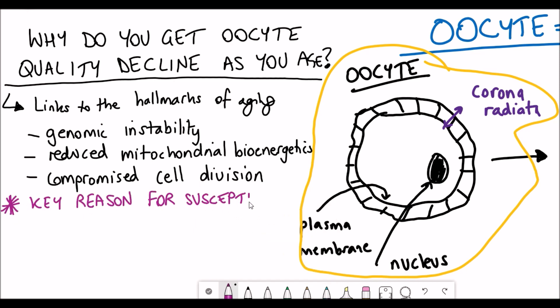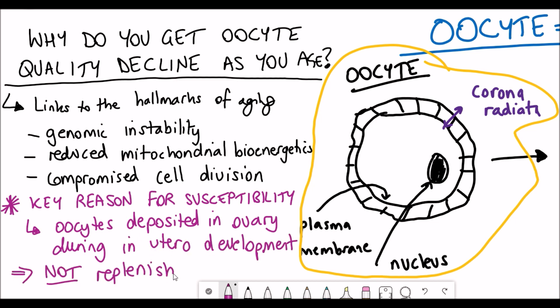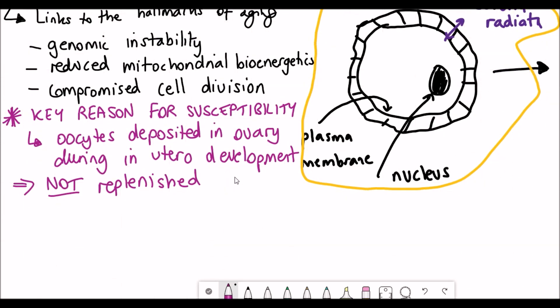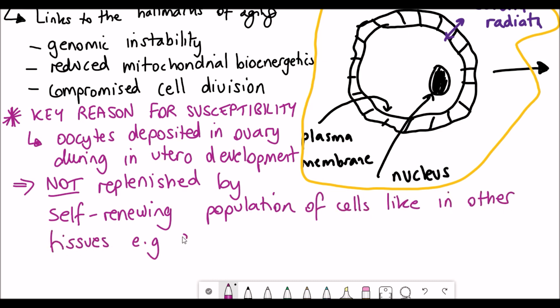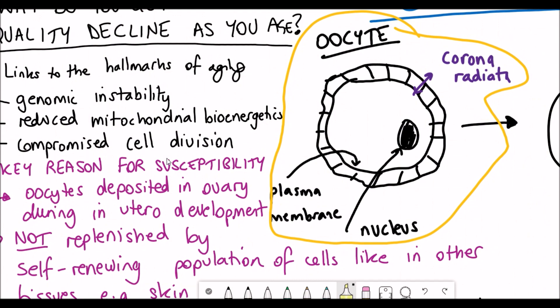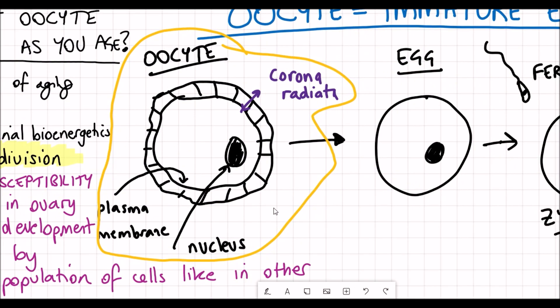One of the main reasons why oocytes are so susceptible to aging is that oocytes are deposited in the ovary during in utero development at a very early stage of life, and they aren't replenished by a self-populating population of stem cells like you get in skin. Once you've got this finite population of oocytes, that's pretty much it - they're there until they're used.